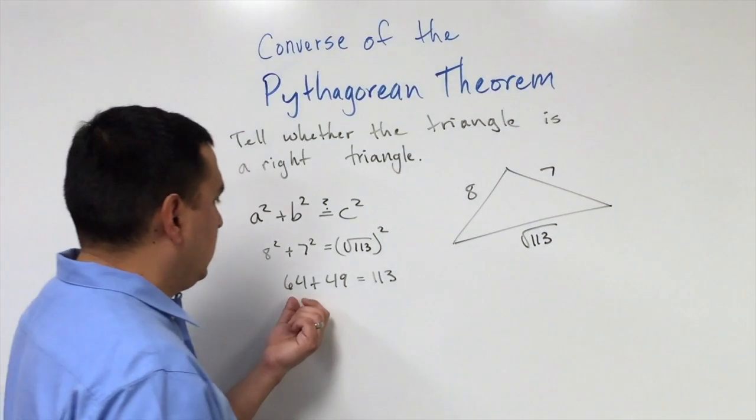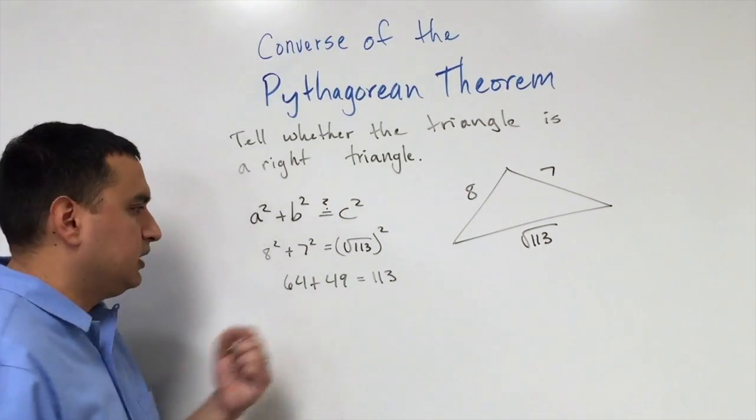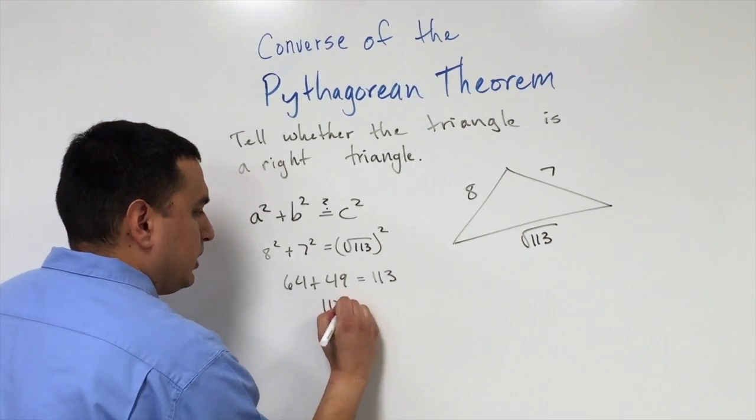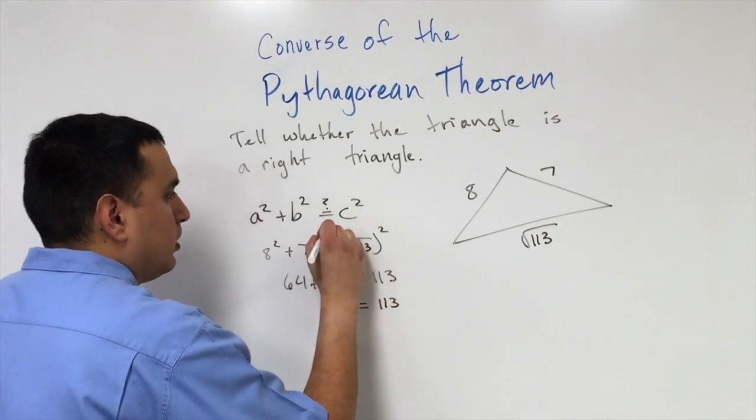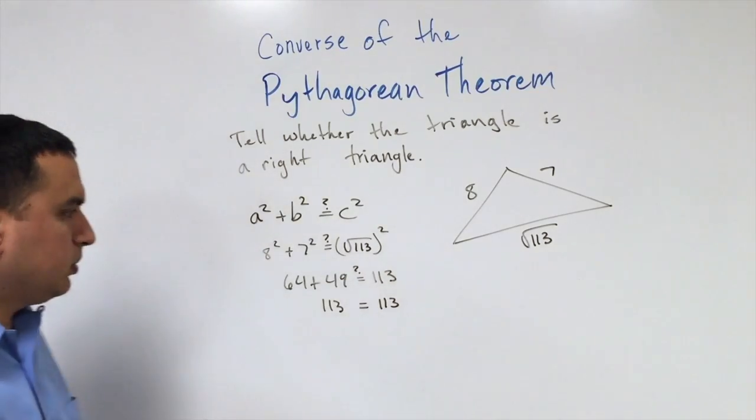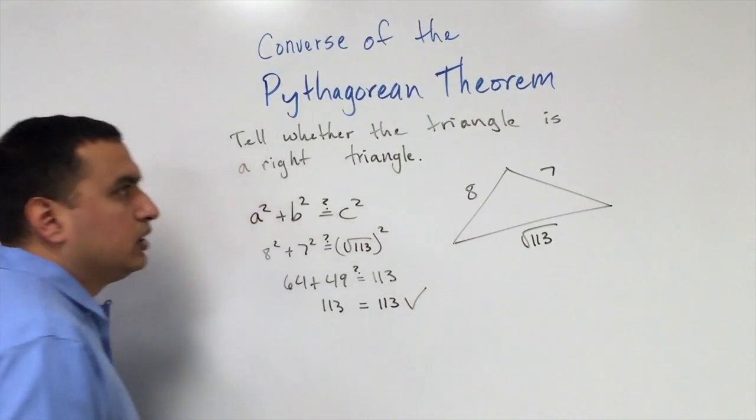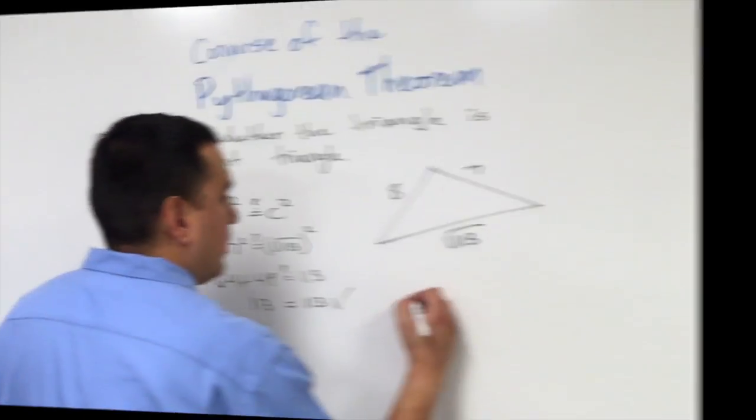If I add 64 and 49, that does come out to 113. These should all be question marks because we're asking, are they equal? When we get down to the bottom, yes, they are equal. So I would say yes, this is a right triangle.